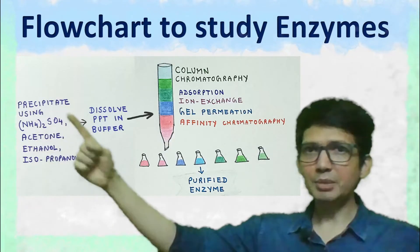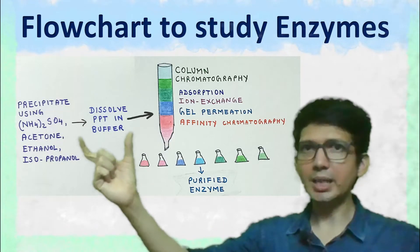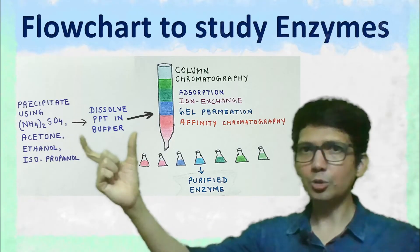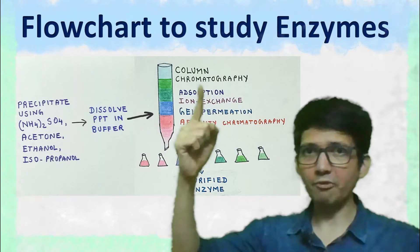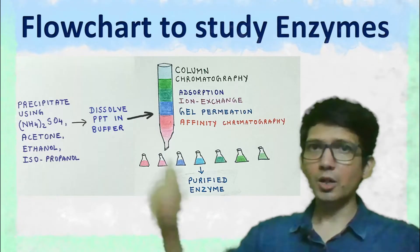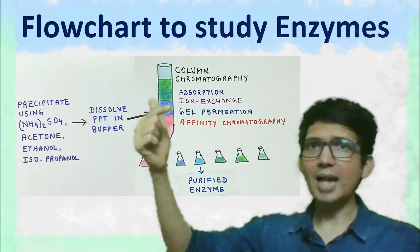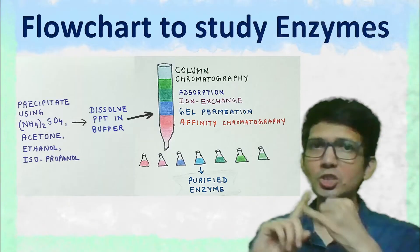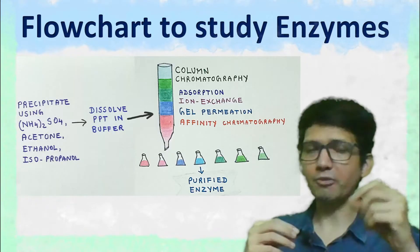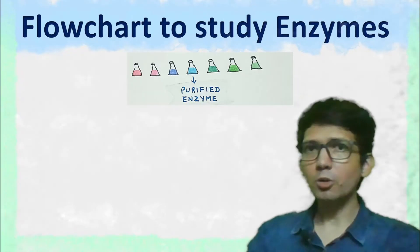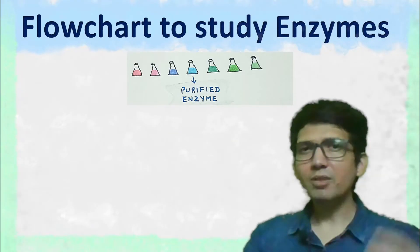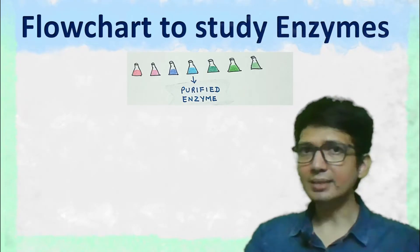Once the enzyme is precipitated, we dissolve the precipitate in buffer. We will now use this solution to perform column chromatography. So depending on your enzyme sample, adsorption column chromatography, ion exchange chromatography, gel permeation chromatography, or affinity chromatography can be performed. During chromatography, the enzyme is purified, and several studies can be carried out with the purified enzyme.